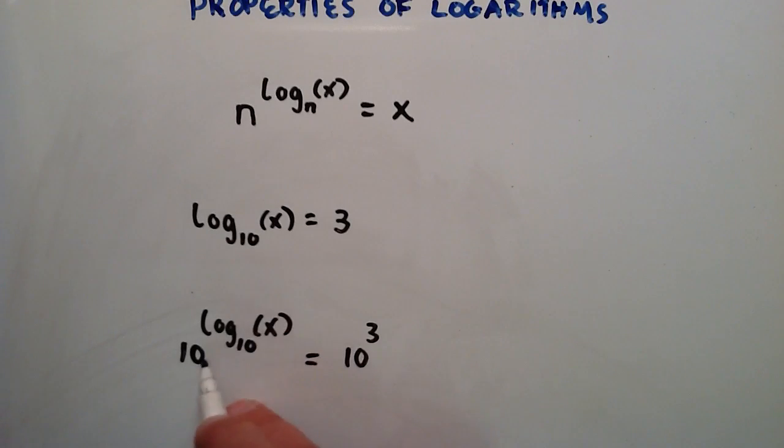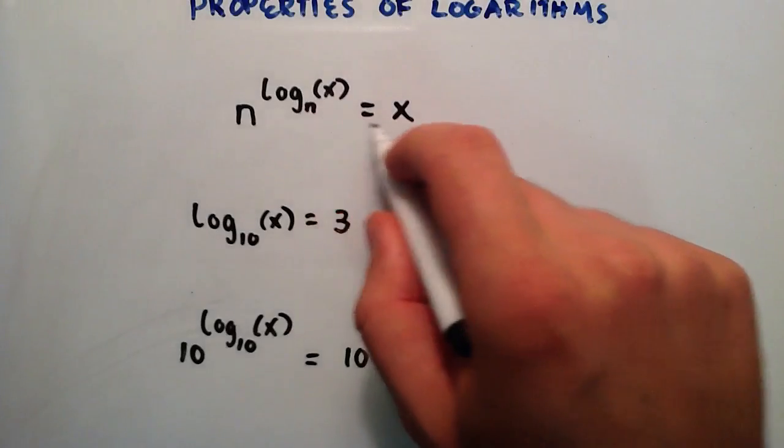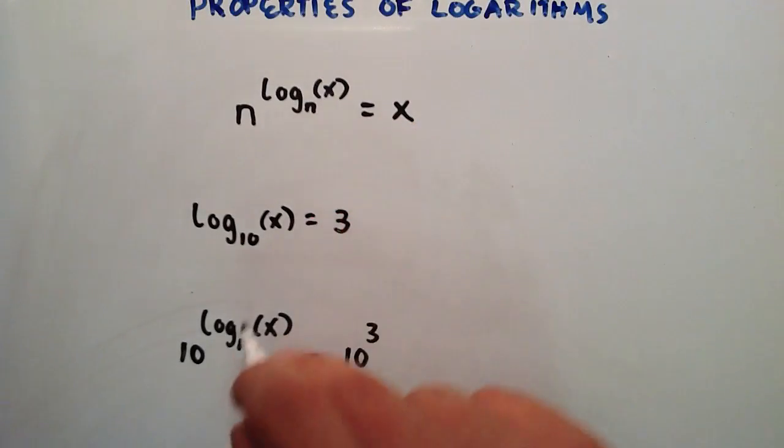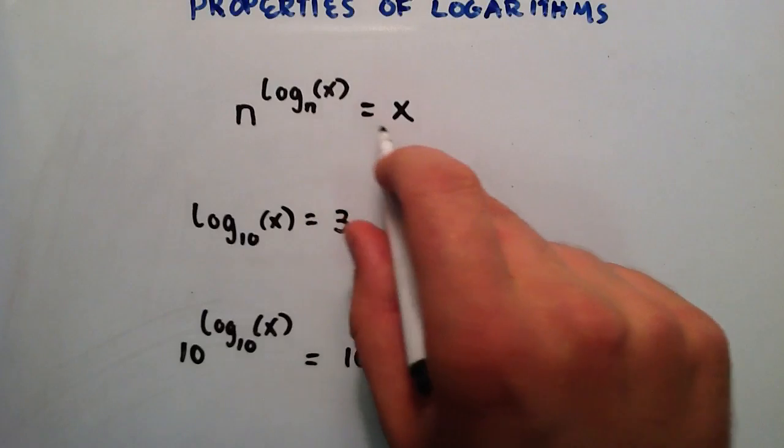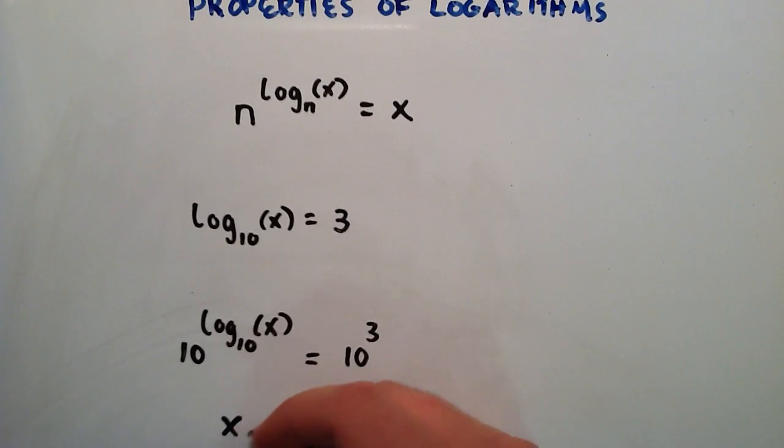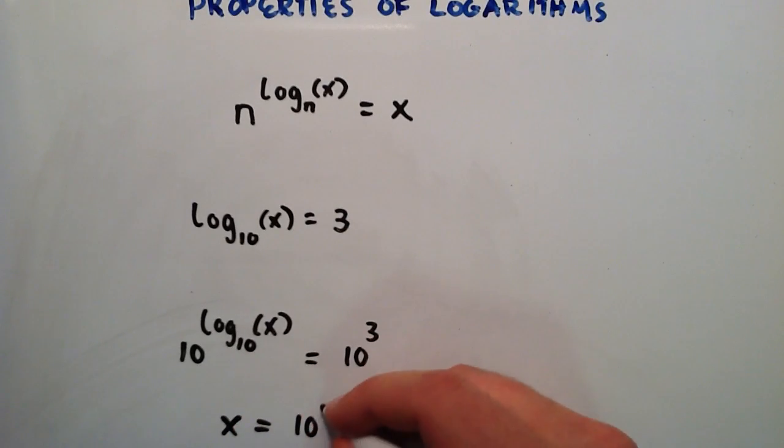So now that we've got this in this form, we can just use this property here and we'll find that this whole side is equal to x because of this property.